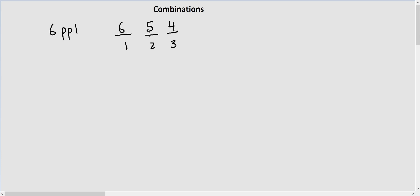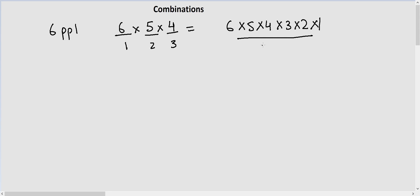If you don't understand this concept you can go back to our previous video on the permutation formula. All we have to do is multiply them together, which gives us the permutation formula: 6 × 5 × 4 × 3 × 2 × 1 divided by 3 × 2 × 1. This can be written as 6P3, because we have six people who can sit in three different chairs.